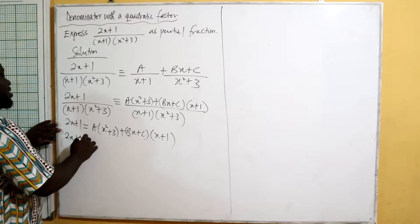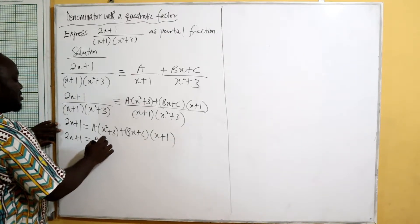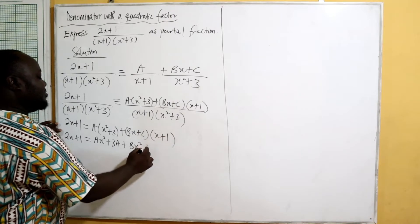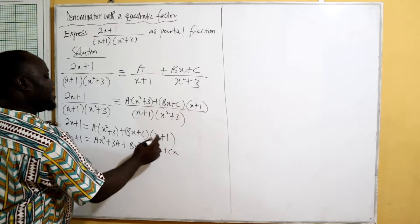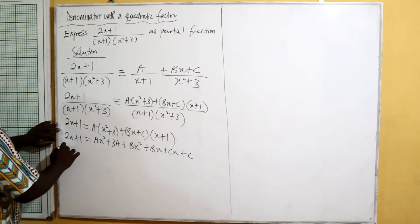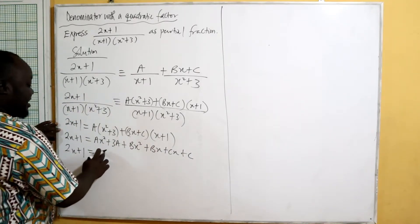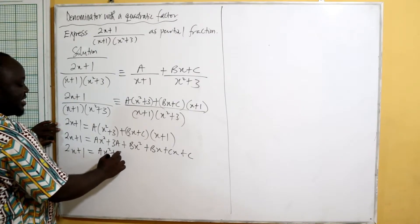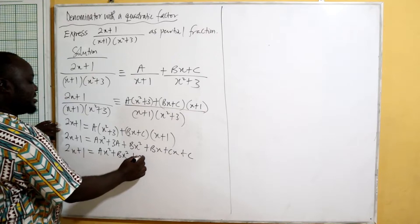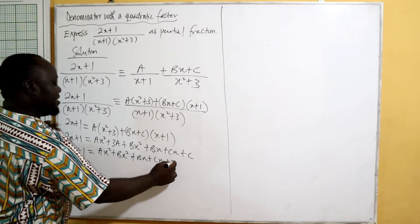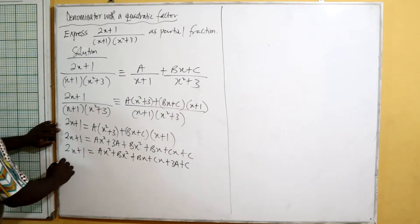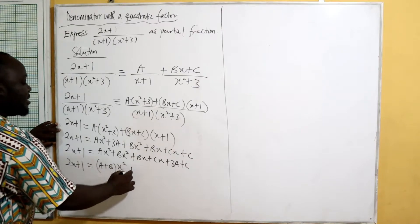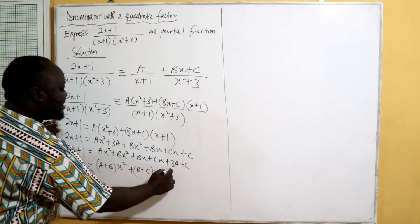Expanding: two x plus one equals ax squared plus 3a, plus bx squared plus bx, plus cx plus c. Grouping like terms: two x plus one equals a plus b times x squared, plus b plus c times x, plus 3a plus c.